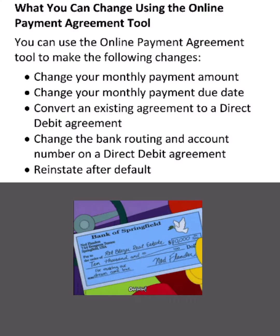What you can change using the online payment agreement tool: you can use the tool to make the following changes — change your monthly payment amount, change your monthly payment due date, convert an existing agreement to a direct debit agreement, change the bank routing and account number on a direct debit agreement, or reinstate after default.